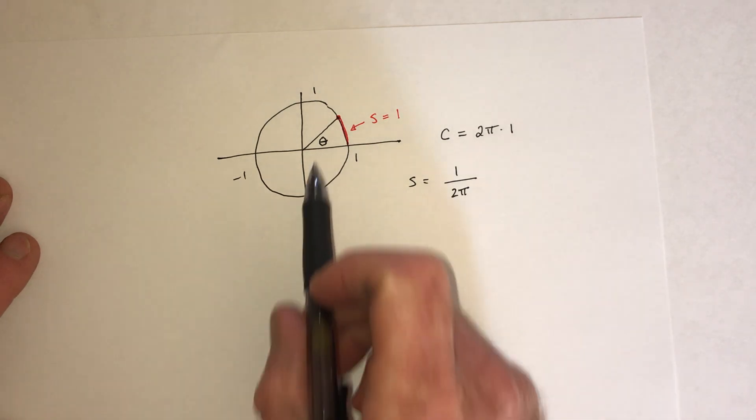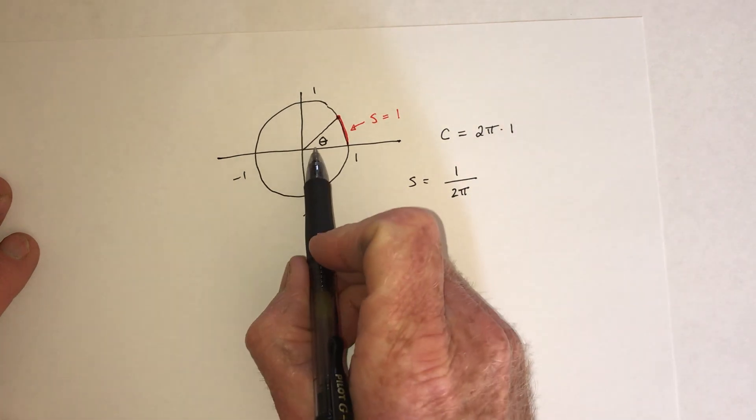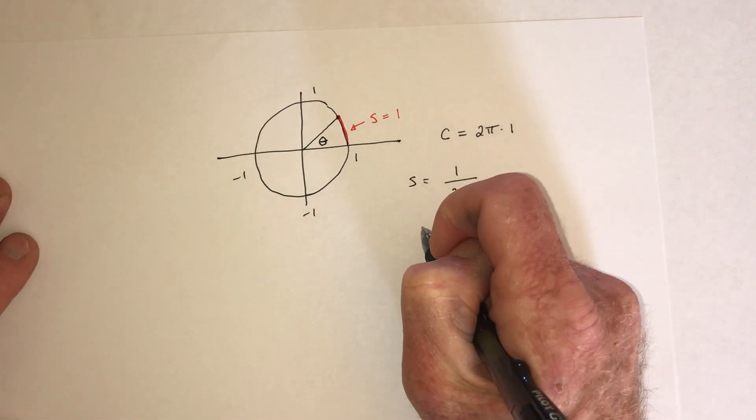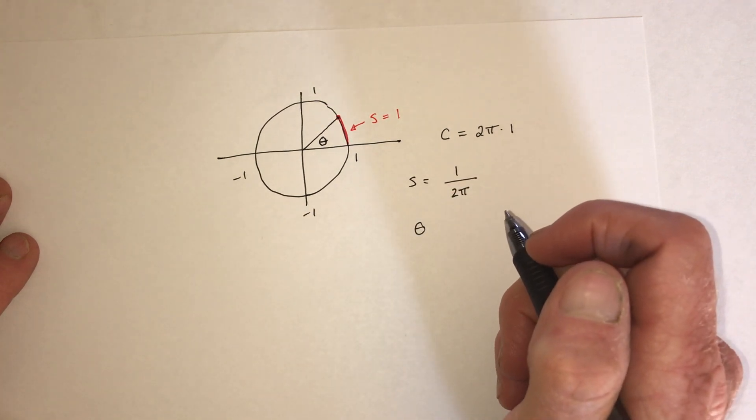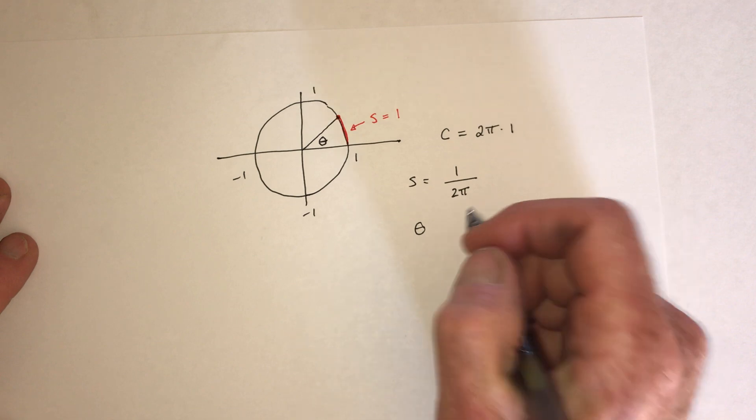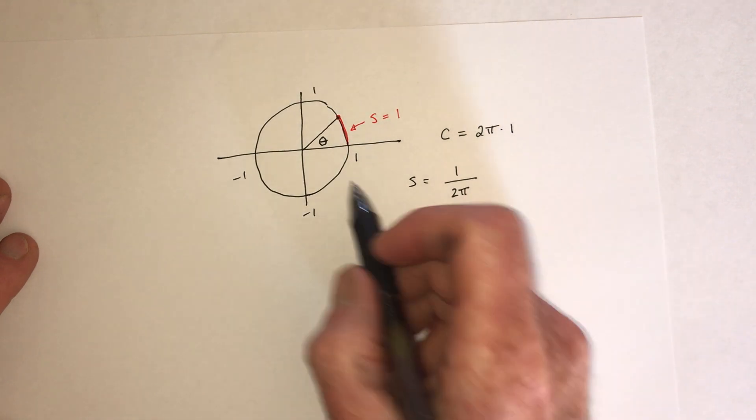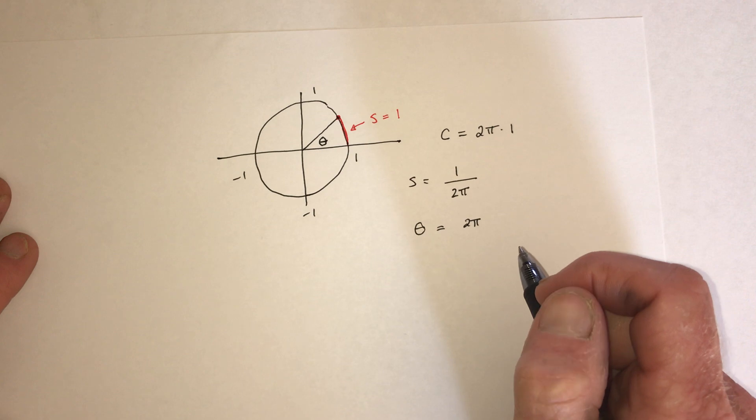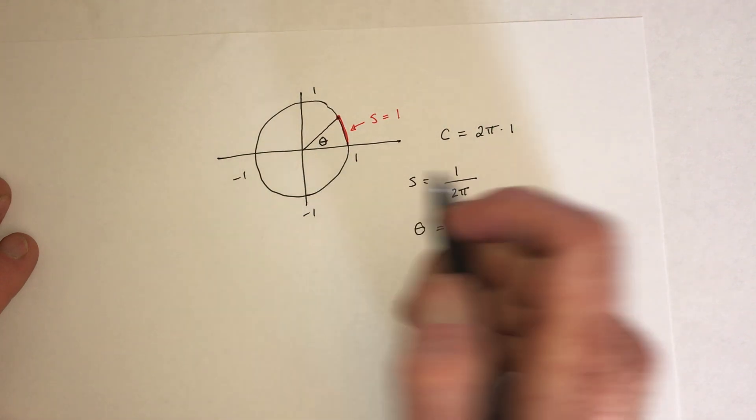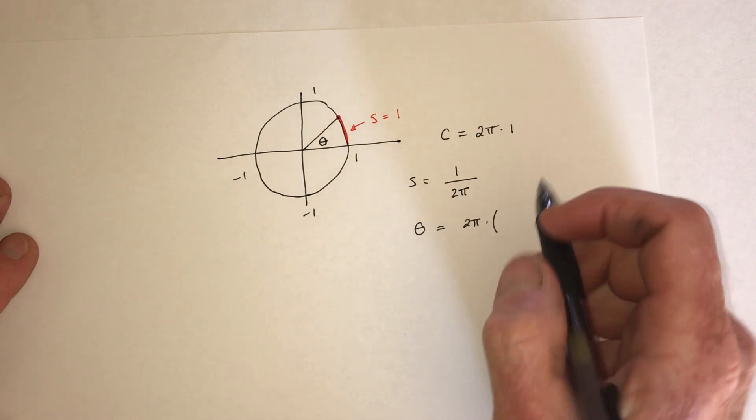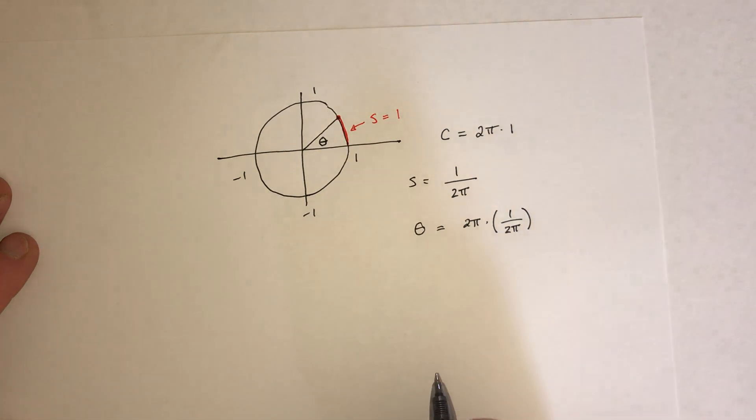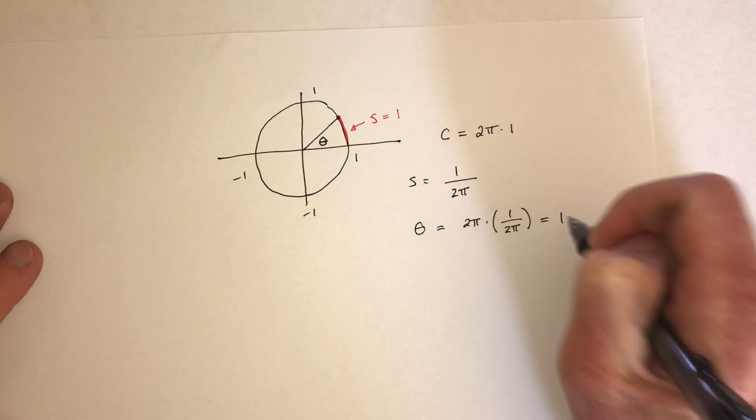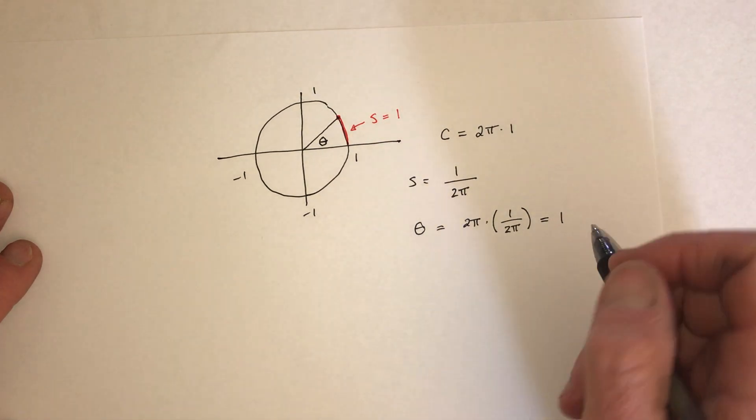Then how much is the angle theta? Well, theta is actually just a fraction of the circle also. So that means that theta, theta is going to equal, well, in total, the angle, if you went all the way around the circle, would be 2 pi. But then this is just a fraction of it. So it's got to be the same fraction. It's 1 over 2 pi. And then the 2 pi and the 2 pi are going to cancel. That means that theta equals 1. So that is 1 radian.